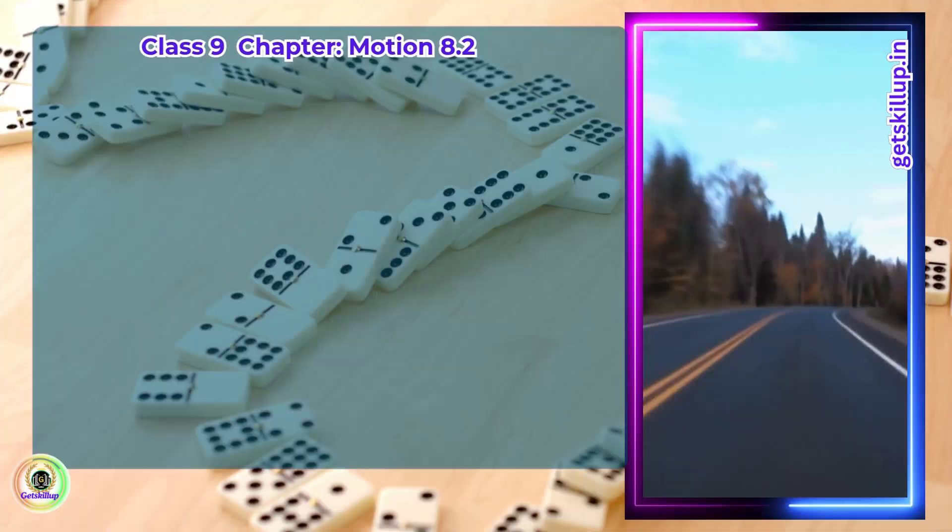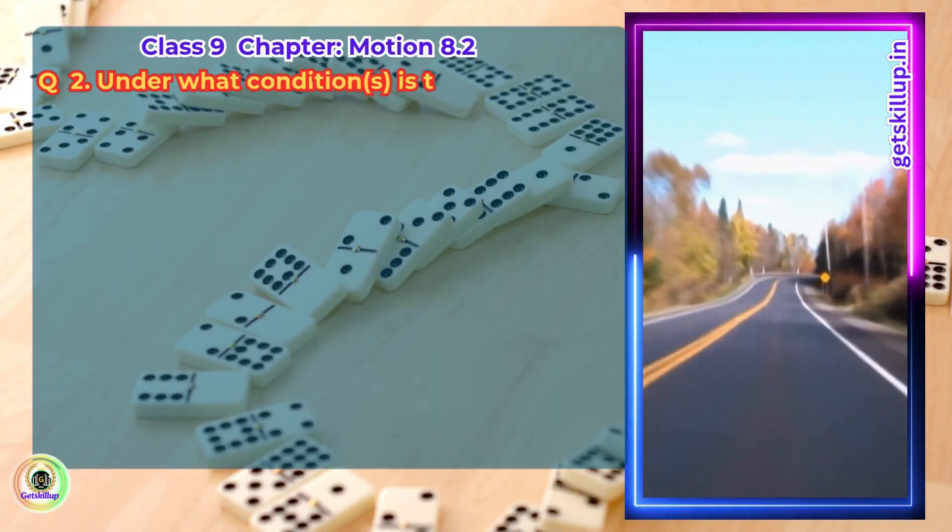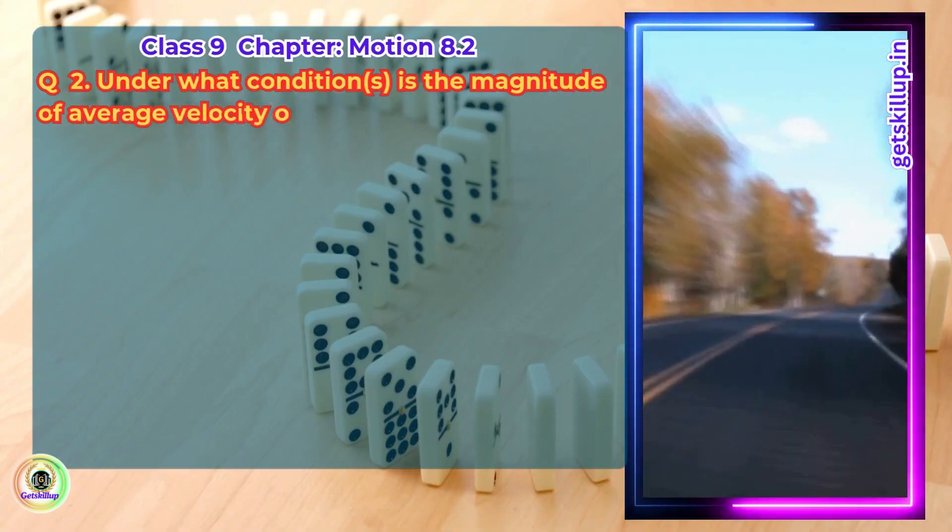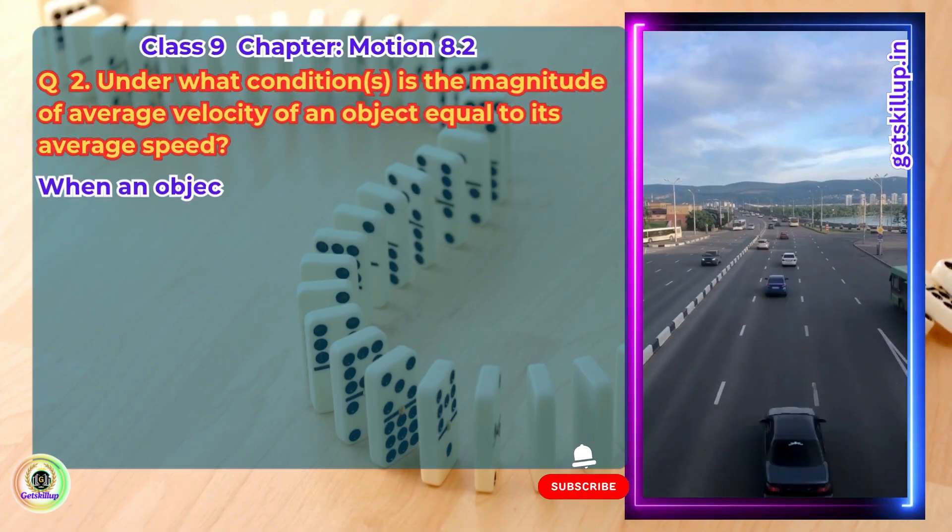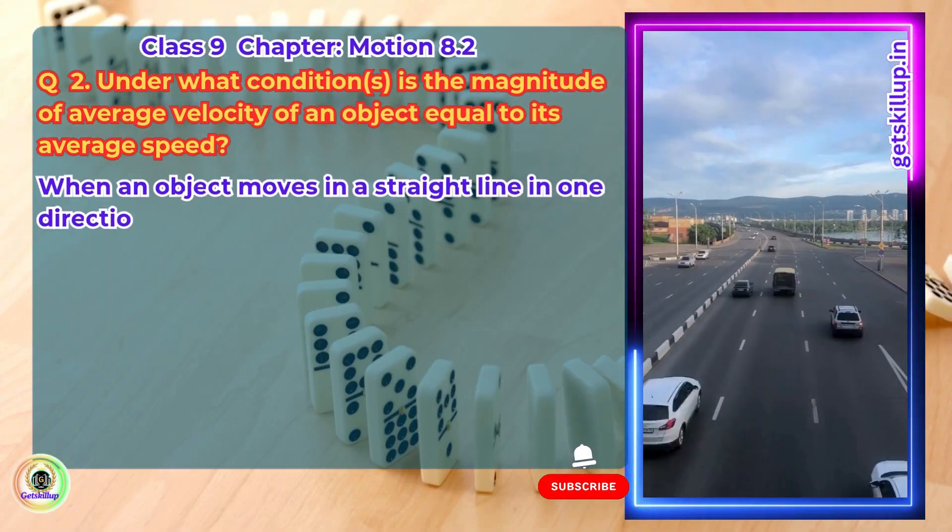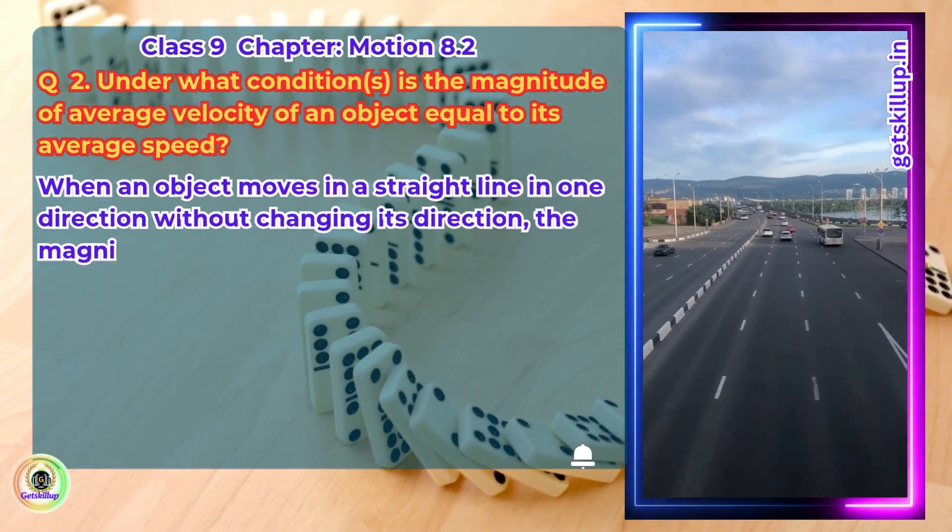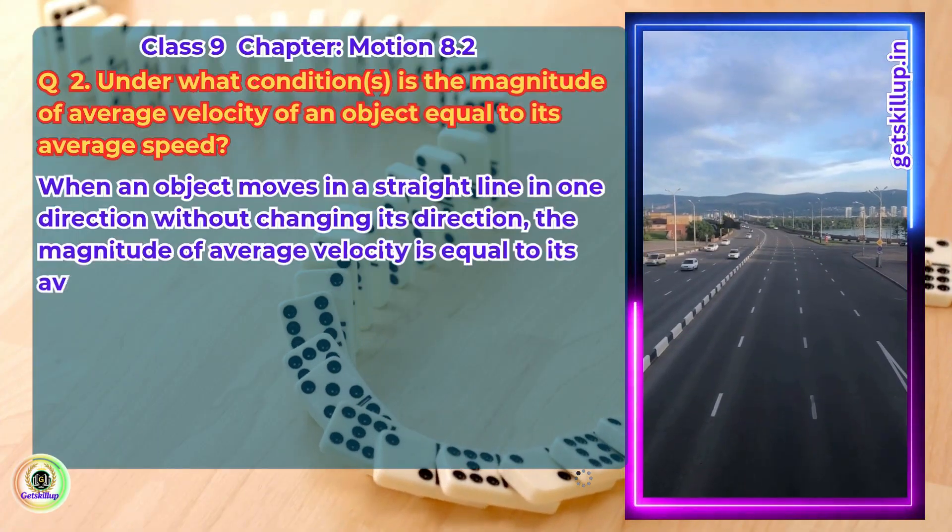Question 2. Under what conditions is the magnitude of average velocity of an object equal to its average speed? Answer. When an object moves in a straight line in one direction without changing its direction, the magnitude of average velocity is equal to the average speed.